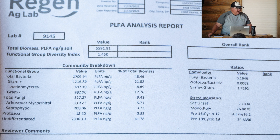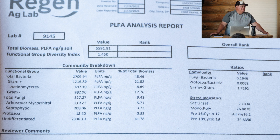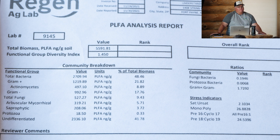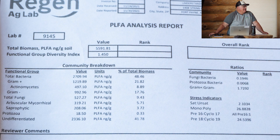We also do a total nutrient digestion test with all clients — that's the one showing both the inorganic and organic fractions of nutrients in the soil. On nearly 33 million acres tested, we have never found one that's deficient in anything. So ask your agronomist to explain that. You're not deficient in nutrients; your soil is deficient in biology.